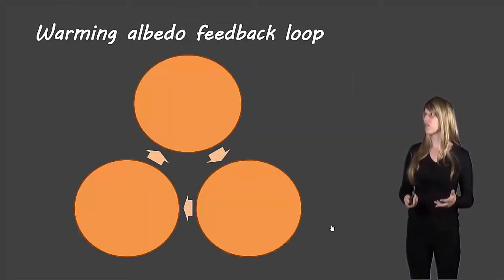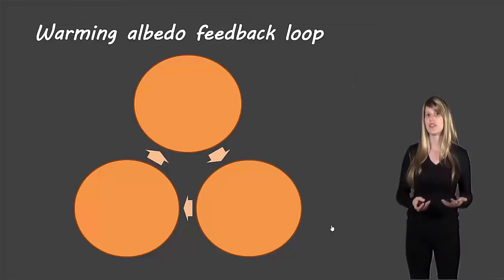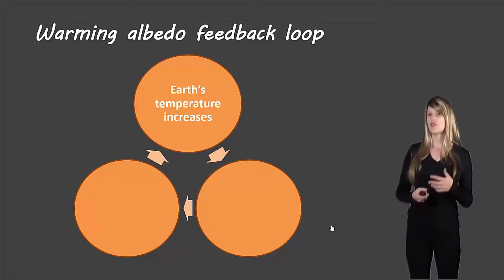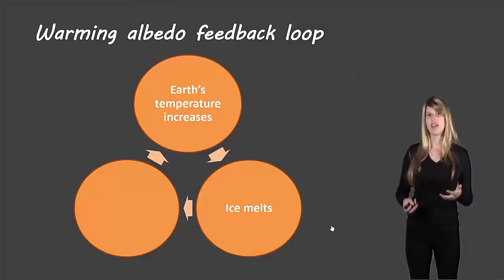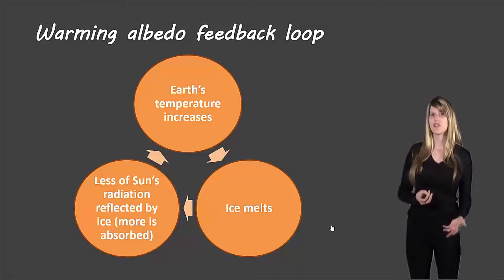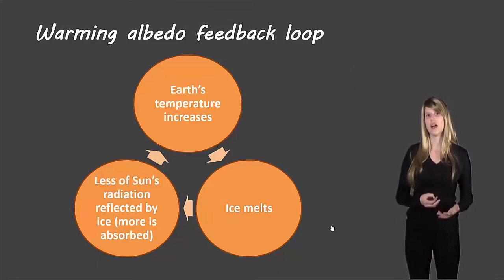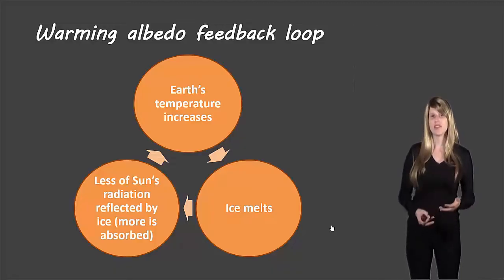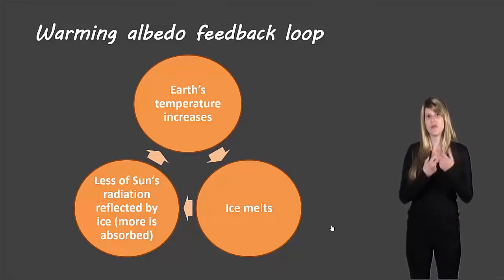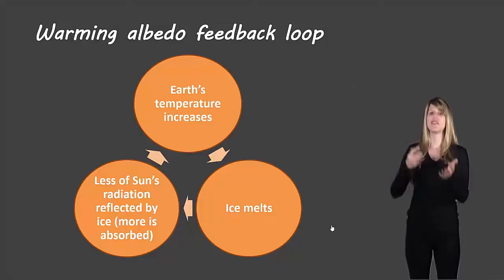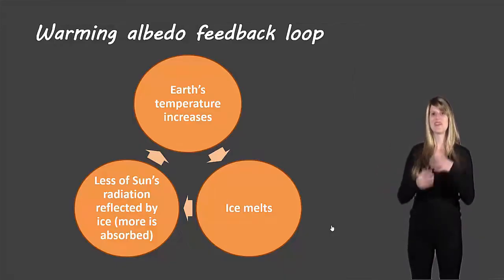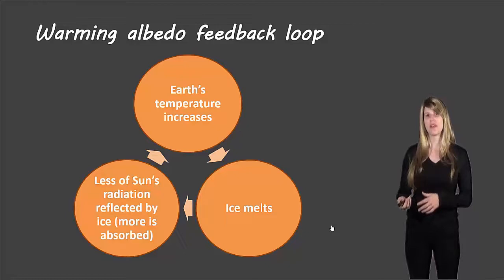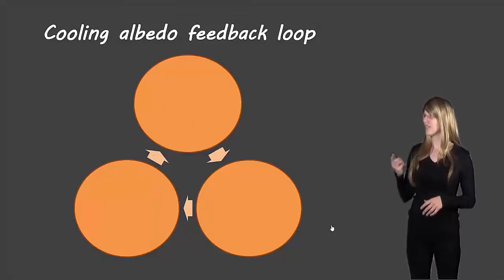If we start off with the warming albedo feedback loop—and this is something we're seeing right now on Earth—if the Earth's temperature increases, then the ice and snow melt. If the ice and snow melt, then less of the sun's radiation is reflected because there's a lower albedo, because that ice and snow has now turned into water. If less of the sun's radiation is reflected, that means more is absorbed. If more is absorbed, the temperature will go up. The temperature goes up, more of the snow and ice will melt, and so on. It causes this spiral. That's the warming albedo feedback loop.